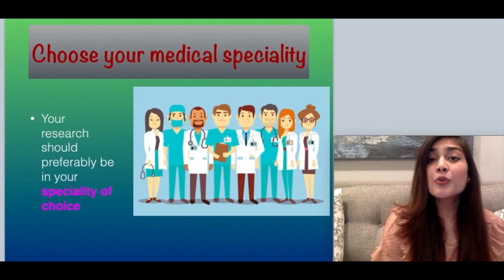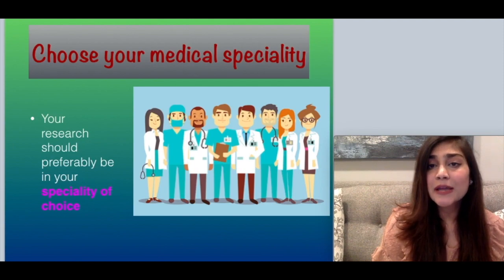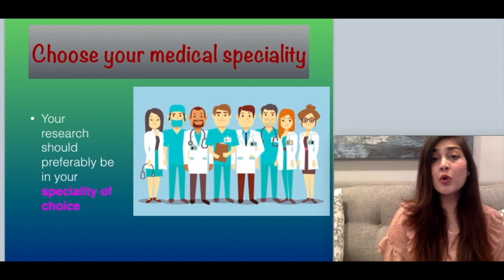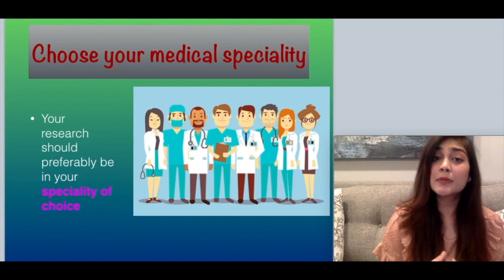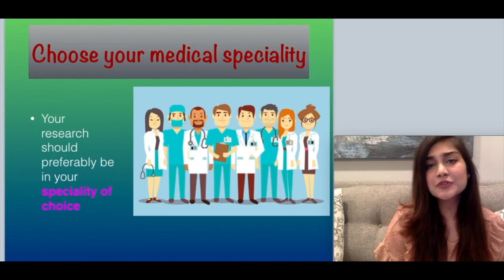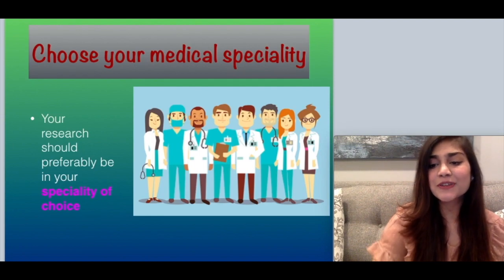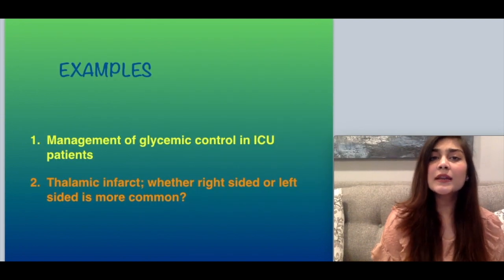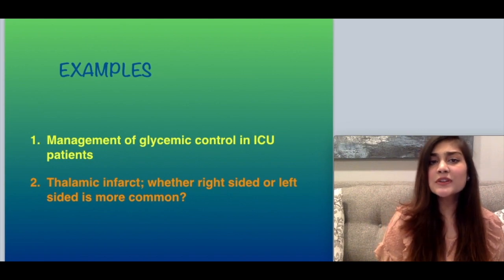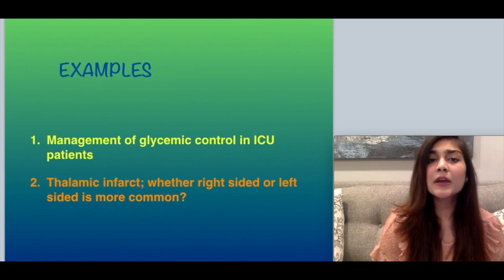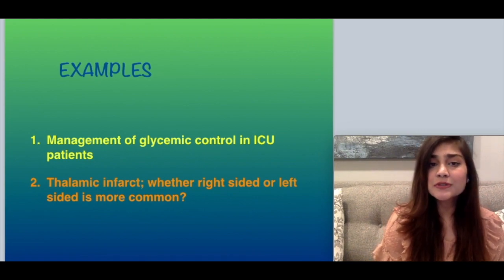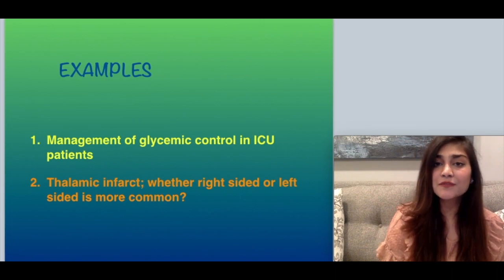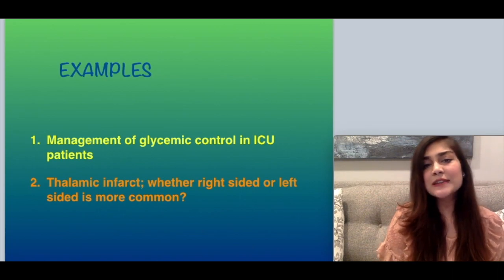Choose your medical specialty in which you want your research article to be published, preferably in your specialty of choice. Examples of good and specific topics are management of glycemic control in ICU patients, and thalamic infarct — where right-sided or left-sided is more common.